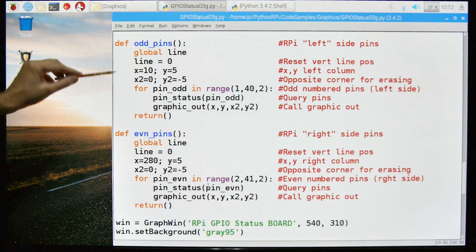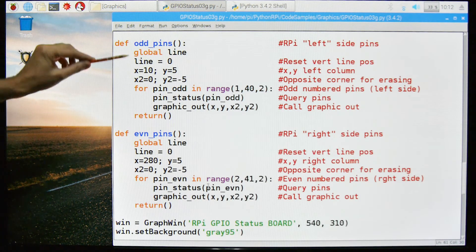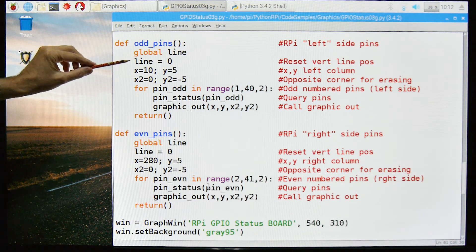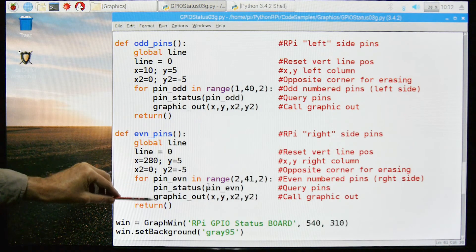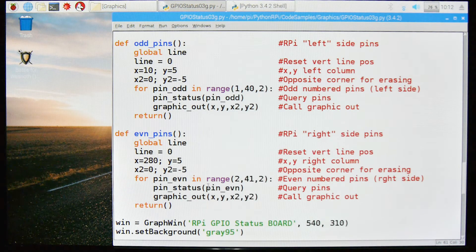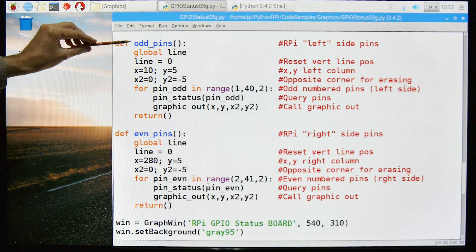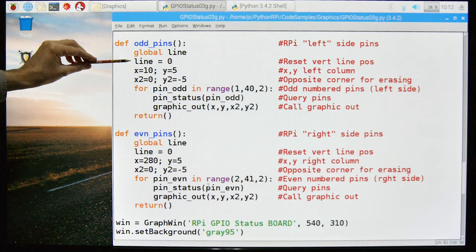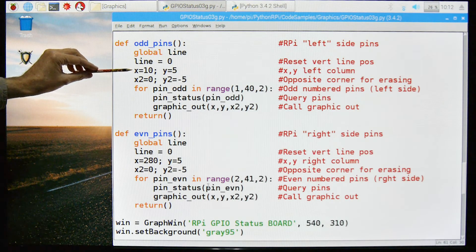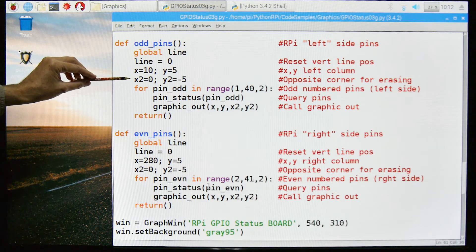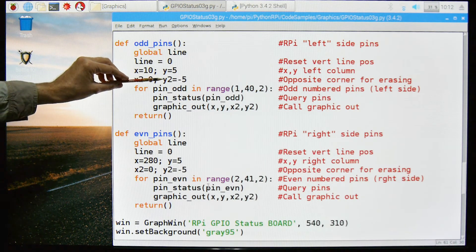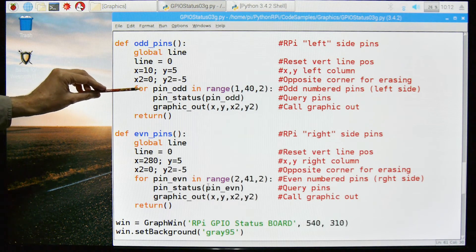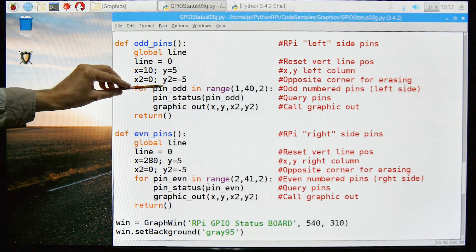These next two functions could be combined, but I did it just, I separated them for clarity. These are the odd pins on the Pi, so the left side of the Pi, as I like to call it, and the even pins, or the right side pins on the Pi. The function starts out with a global line, so this is the vertical position. The line is going to be set to zero. Our first X position is 10, our Y position is 5. Our upper right corner position is zero, and our Y coordinate of that is minus 5.